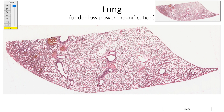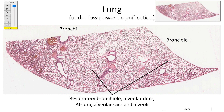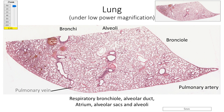A section of lung under low power magnification shows bronchi of various sizes, bronchioles, respiratory bronchioles, alveolar duct, atrium, alveolar sac, and numerous alveoli. We can also see sections of pulmonary arteries accompanying the bronchial tree, and pulmonary veins between the alveoli.